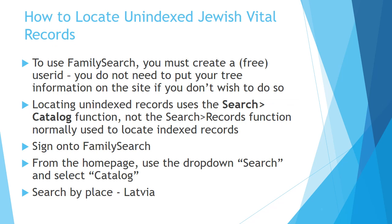To find these unindexed Jewish vital records you need to use FamilySearch, and to do so you have to create a free user ID. It is completely free — you're not under any obligations and you don't need to put your tree information on the site if you don't wish to. Instead of the search records function used for indexed records, unindexed records use the search catalog function. Sign into FamilySearch, then from the home page use the same search dropdown but select search catalog. All catalog records are searched by place — in this case we're looking for Latvia.